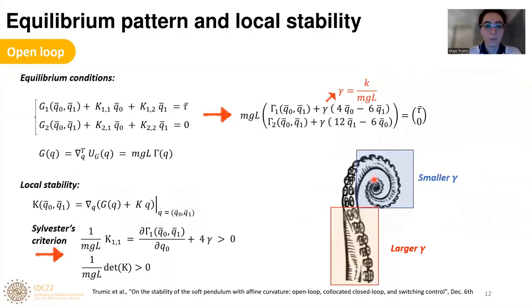The second particularity of these soft robots lies in the equilibrium pattern and its local stability. Here you have extracted equilibrium conditions of this soft pendulum, and here you can see the expression of a gravity vector. When we substitute gravity vector inside this set of equations, we get these conveniently expressed equilibrium conditions. They are convenient for us because we can define the parameter gamma. Gamma is a term that comprises robot parameters like stiffness, mass, and length.